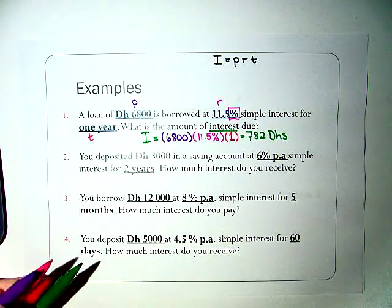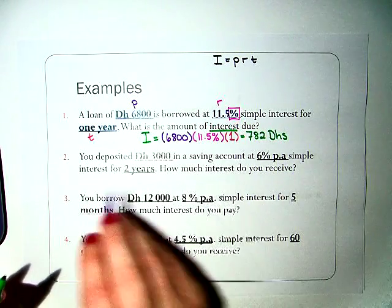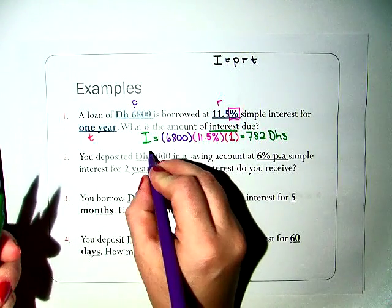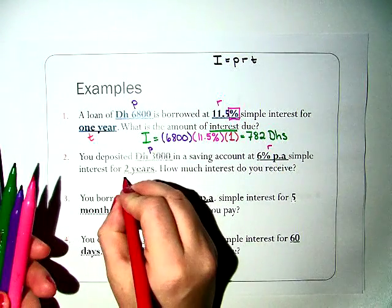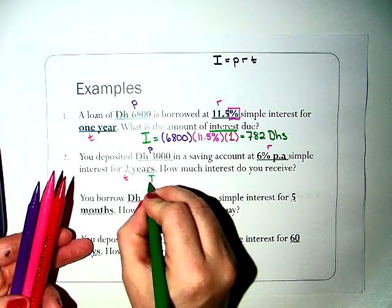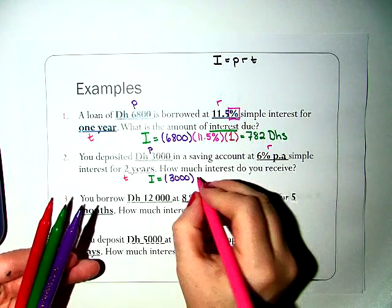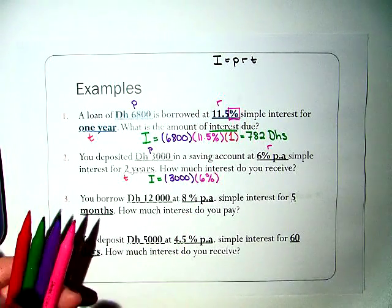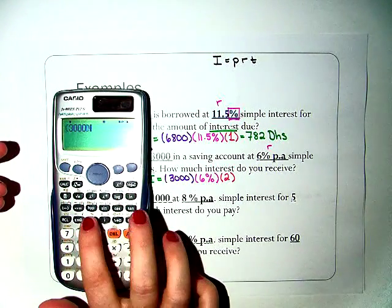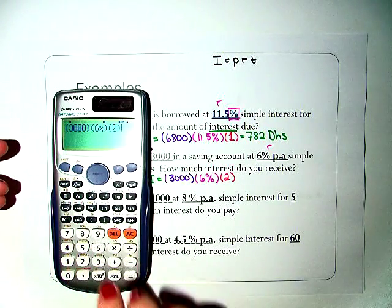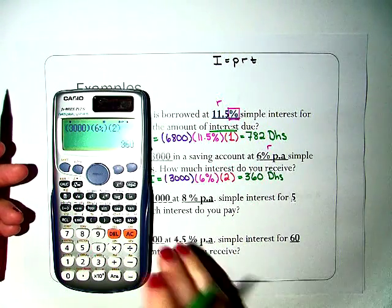Okay, let's do the next one. You deposit 3,000 into a savings account at 6% PA. PA means percent annum or percent per year, simple interest for two years. How much interest do you receive? So this is my P. My rate is really easy to find, it's whatever is connected to the percentage symbol. And my time is now two years. So we'll set this up: I equals 3,000 times 6% times 2. And that gives me the interest of 360 dirhams.